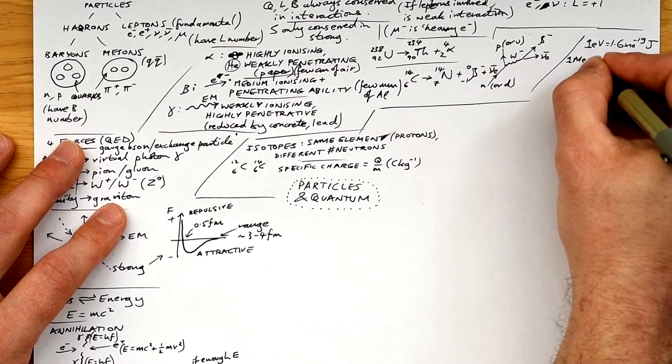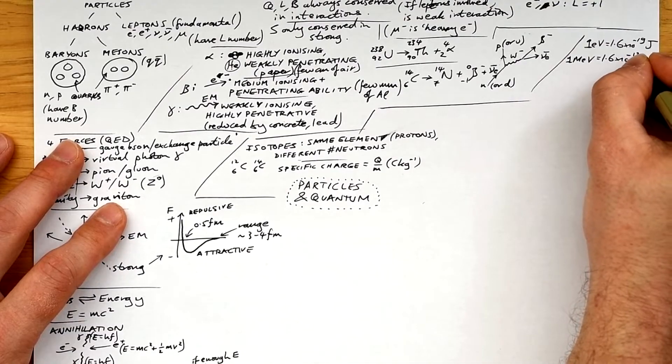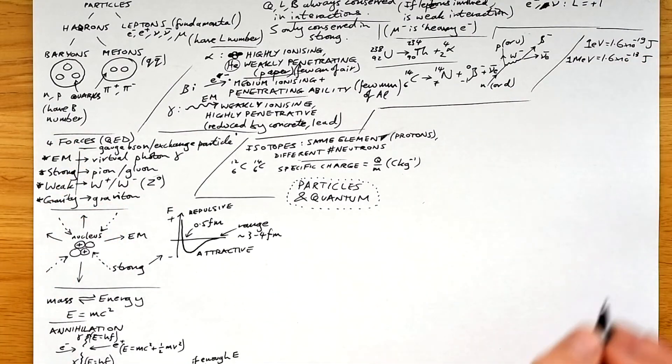So that means that one electron volt is 1.6 times 10 to the minus 19 joules. Quite often we deal with mega electron volts, and so if we have to convert that into joules, it's 1.6 times 10 to the minus 13. Yes, you can figure that out, but it's useful as a shortcut.